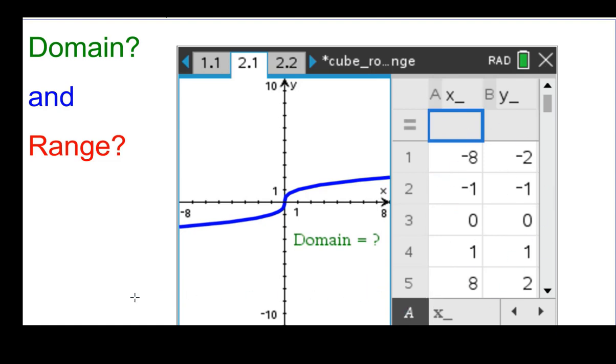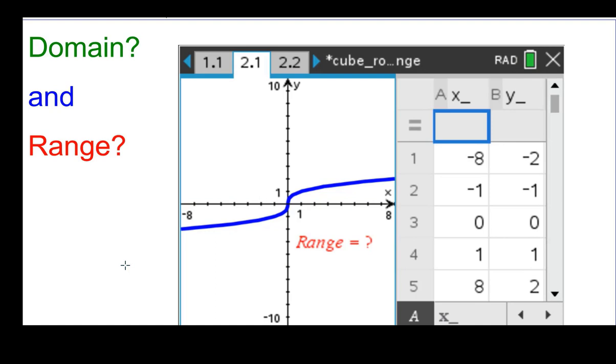So we'll look at the domain first. And you can see that if you look here, all the real numbers have a point either above or below it or right here at the origin. So the domain is all real numbers. We usually write that with the script R. The range kind of goes slowly but all the y values have corresponding x values so all real numbers for that as well.